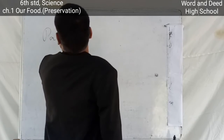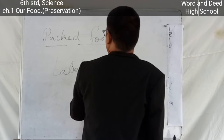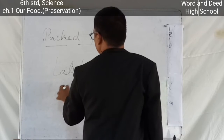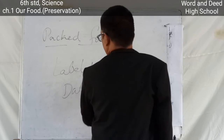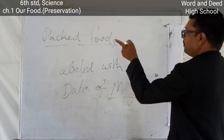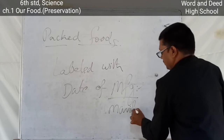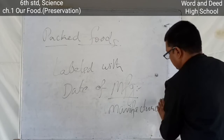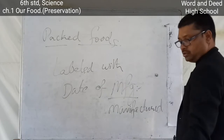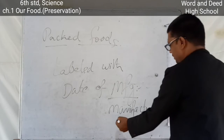Some packed foods are labeled with the date of MFG — this abbreviation stands for 'manufactured' or date of manufacture — written on the cover. If you are buying a packed food, you should observe the date of manufacturing.